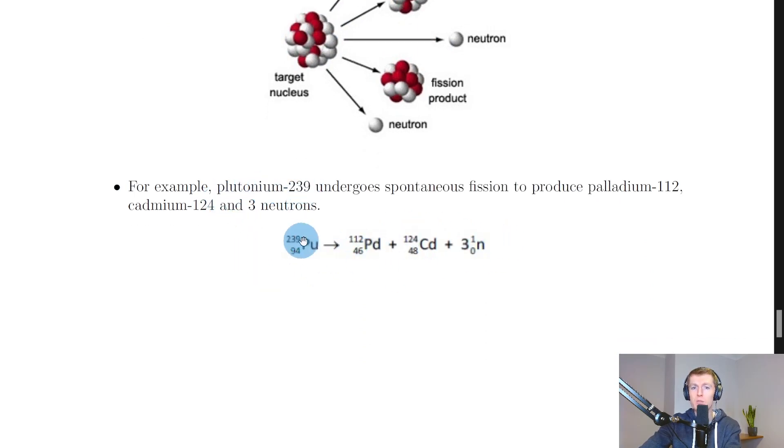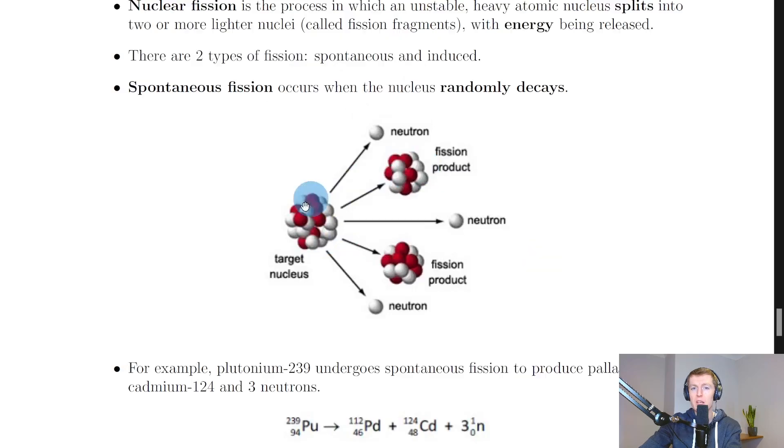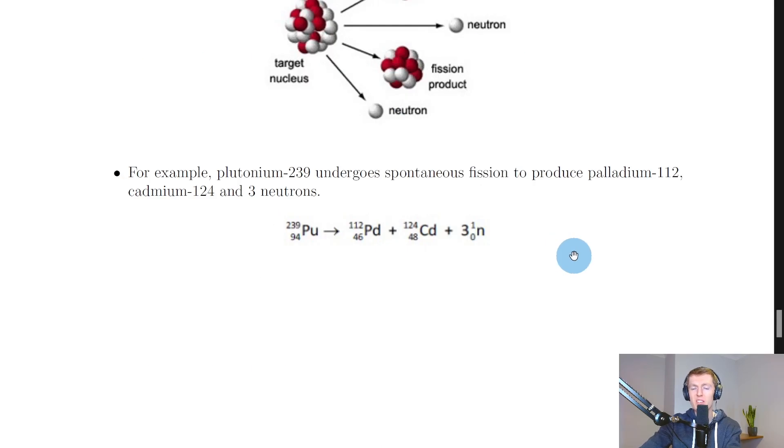Where we've got plutonium-239 undergoing a spontaneous fission to produce palladium-112, cadmium-124, and three neutrons. So here we've got our parent nucleus, two daughter nuclei, plus three neutrons being released. So this could be our plutonium here, our palladium, our cadmium, and then our three neutrons.